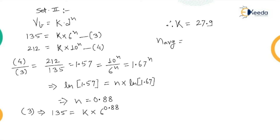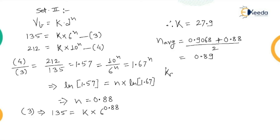The average value of n = (0.9068 + 0.88) / 2. The average value of K for the power law equation = (25.03 + 27.9) / 2 = 26.46. As this is a constant, there is no unit.